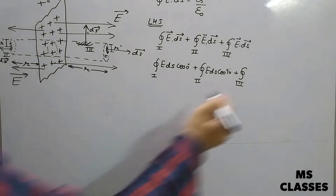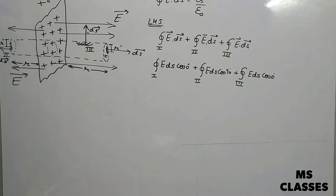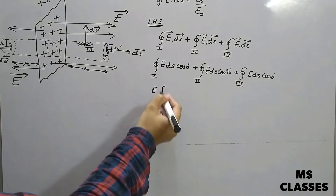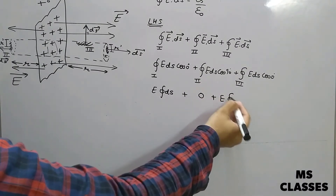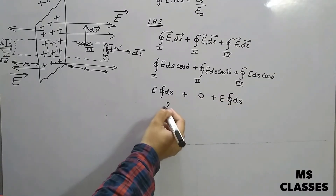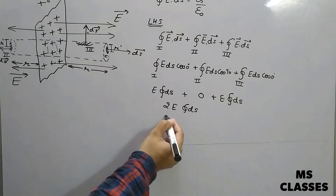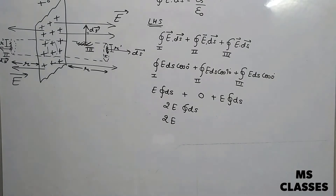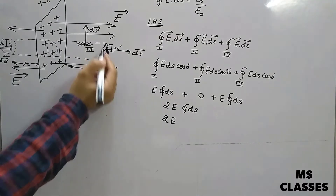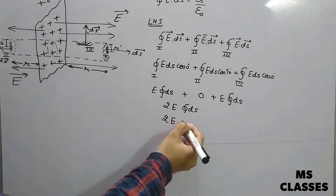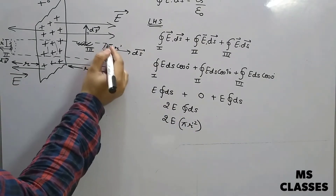For the second surface, the area vector is perpendicular to the electric field, so the flux is zero there. This gives us E·integral(ds) plus E·integral(ds), which simplifies to 2E·integral(ds). Integrating ds gives the cross-sectional area, which is π r'², where r' is the radius of the cross-section. So the left-hand side becomes 2E·π r'².